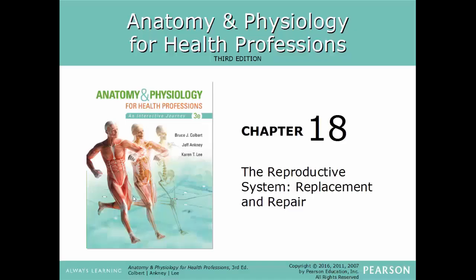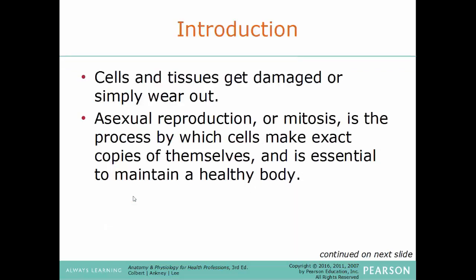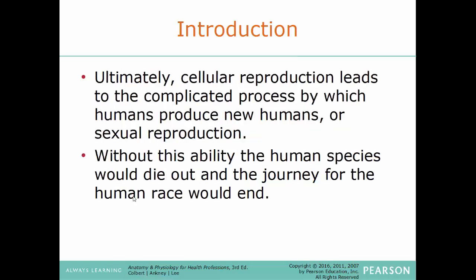Welcome back. In this video we'll cover Chapter 18, the reproductive system: replacement and repair. Cells and tissues get damaged and wear out over time, so these cells have to be replaced. Asexual reproduction or mitosis is a process by which cells make exact copies of themselves and is essential to maintaining a healthy body. Ultimately, cellular reproduction leads to the complicated process by which humans reproduce — sexual reproduction — so without this ability the human species would die out.